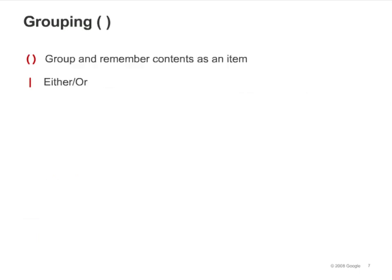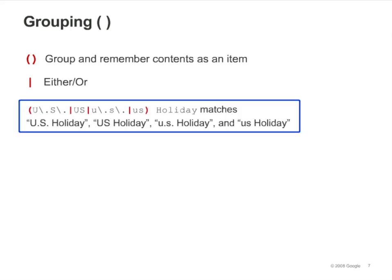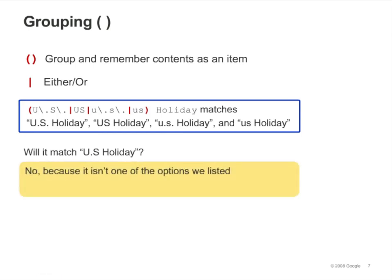It's handy to use parentheses and the pipe symbol — also known as the OR symbol — together. You can just list the strings you want to match, separating each string with a pipe symbol, and enclosing the whole list in parentheses. Here, we've listed 4 variations of "US" that we'll accept as a match for "US Holiday". If it's not in the list, it won't get matched. That's why US Holiday won't get matched if one of the periods is missing. Using question marks, the second regex in the slide will match all of the above variations.